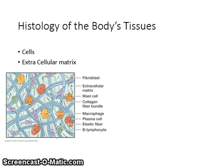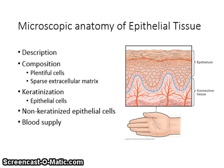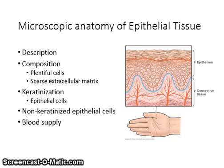Epithelial tissue makes up the outer surface of the body — the skin — and lines body cavities such as the mouth, the stomach, and the intestines. The skin and mucosa of the oral cavity are made up of stratified squamous epithelium, a type of epithelium composed of flat cells arranged in several layers. Epithelial tissue is classified by the shape of the cells and the number of cells in the layer.